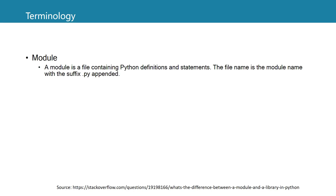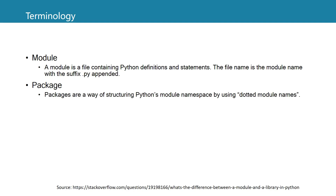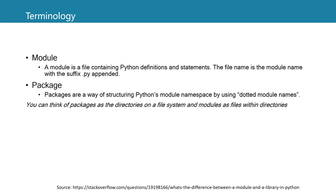Let's first have a look at some terminology, which can be confusing. A module contains Python definitions and statements, but is stored in one file with a .py extension. A package is a way of structuring these modules by using dotted module names. You can think of packages as directories on a file system and modules as files within those directories, separated by a dot.